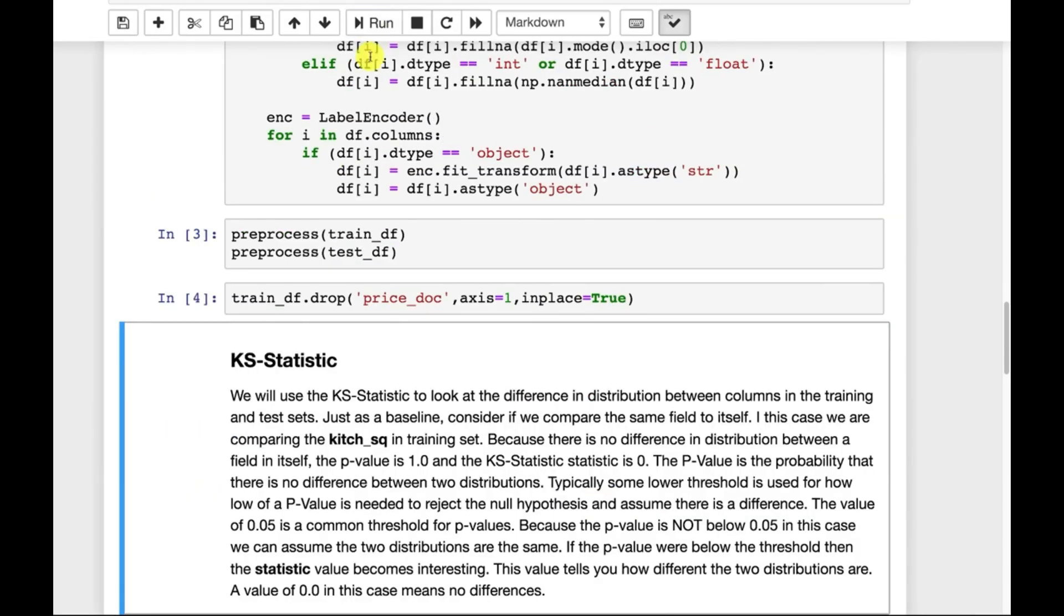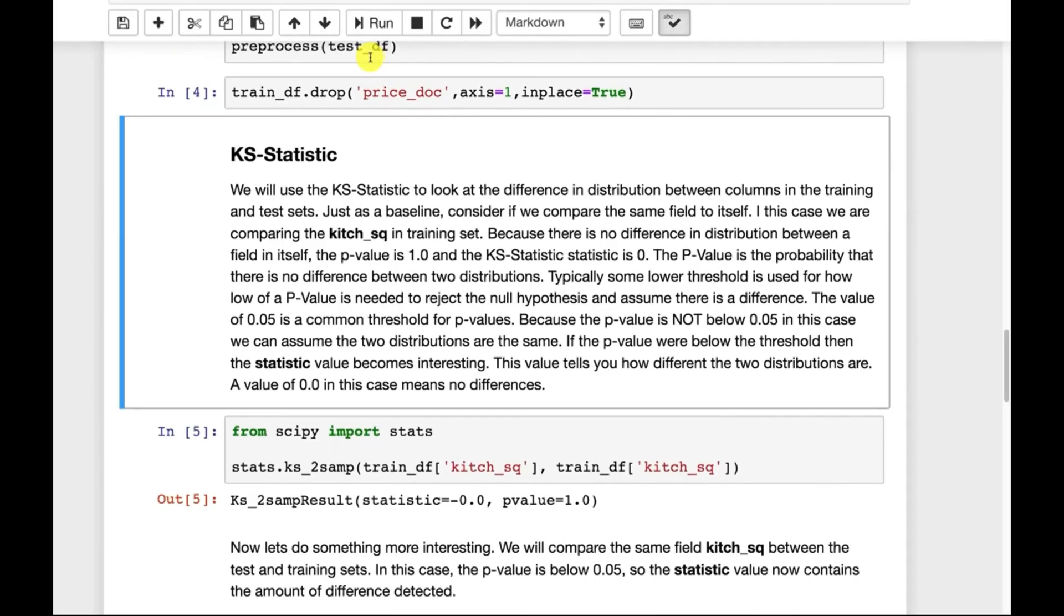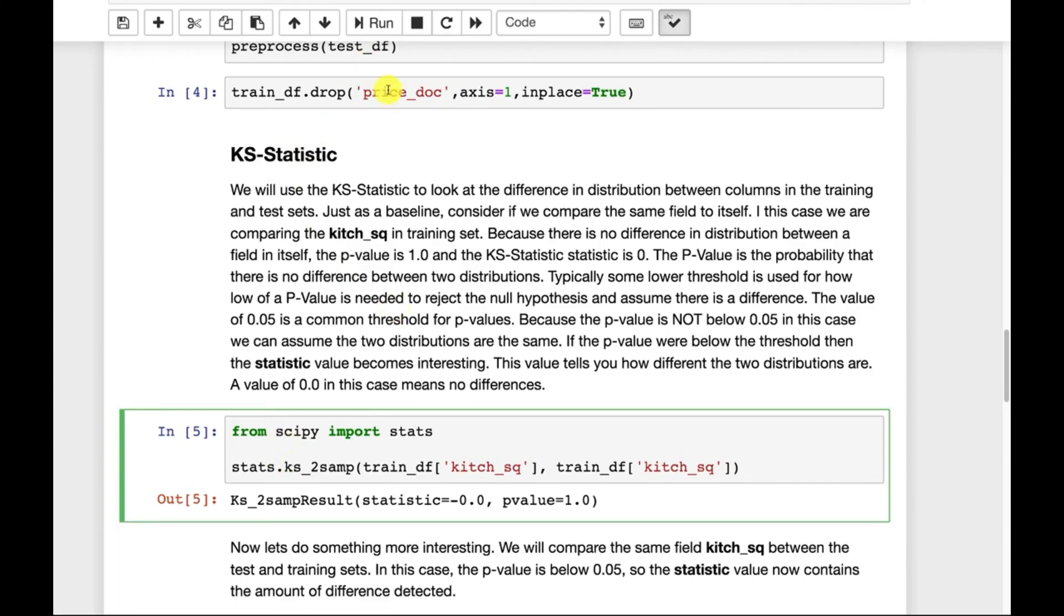Next, we're going to calculate something called the KS statistic. Now, when I first heard this, I thought of chaos statistic, like C-H-A-O-S. But this is the KS statistic. It is essentially looking at how similar are the distributions between two things. So let's just do a sanity check. If I just run this one, I am saying what is the KS statistic between the kitchen square feet and the kitchen square feet? So what is the KS statistic between itself? So the p-value has to be below a certain threshold.